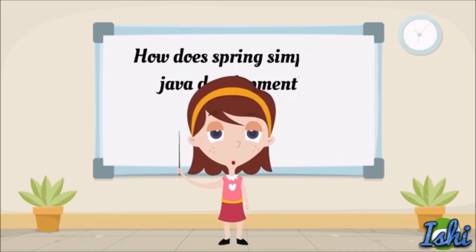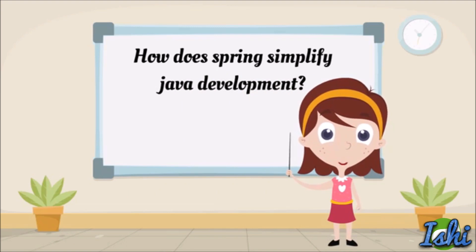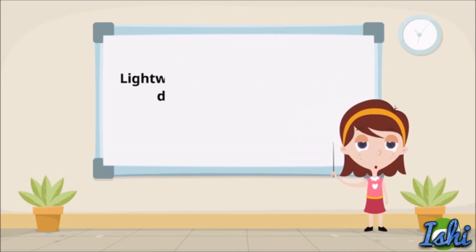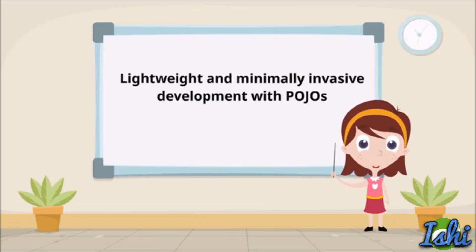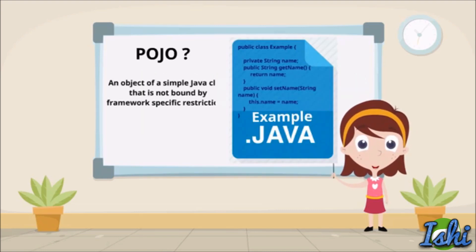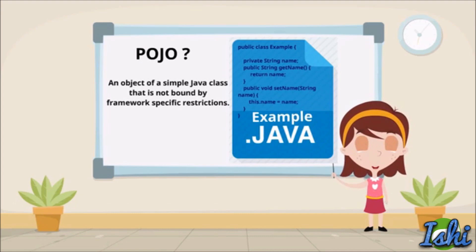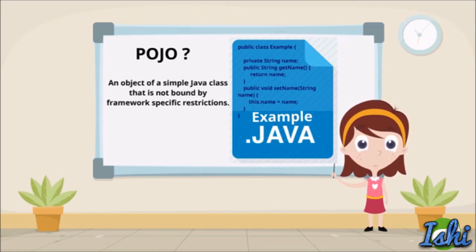Now let's see how Spring actually simplifies Java development. As the first thing, Spring allows lightweight and minimally invasive Java development with POJOs. Do you know what a POJO is? A POJO, or a Plain Old Java Object, is an instance of a simple Java class which is not bound by any framework-specific restriction. Is it confusing?